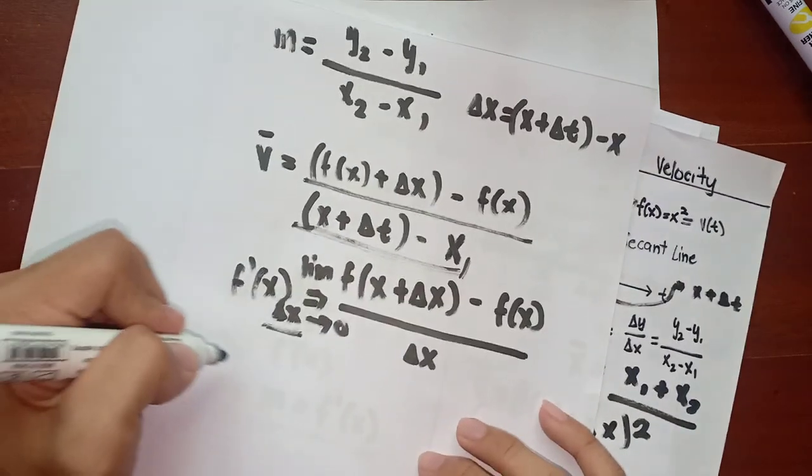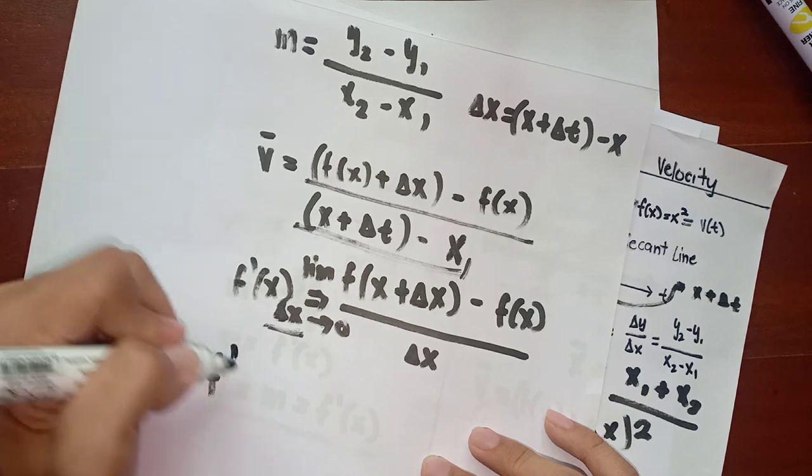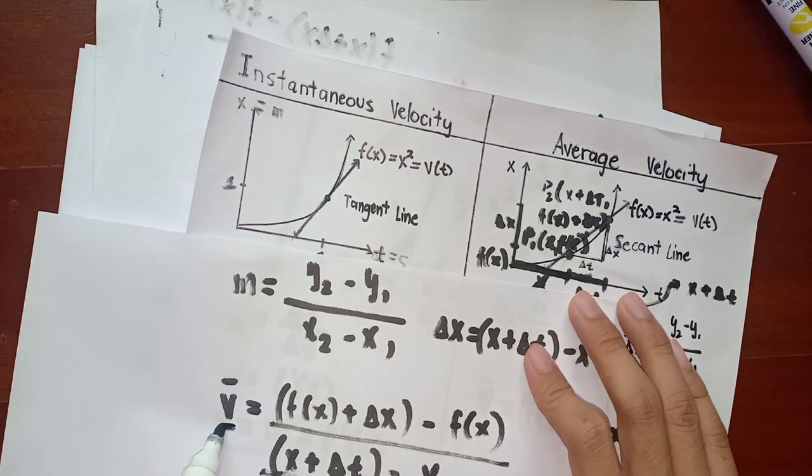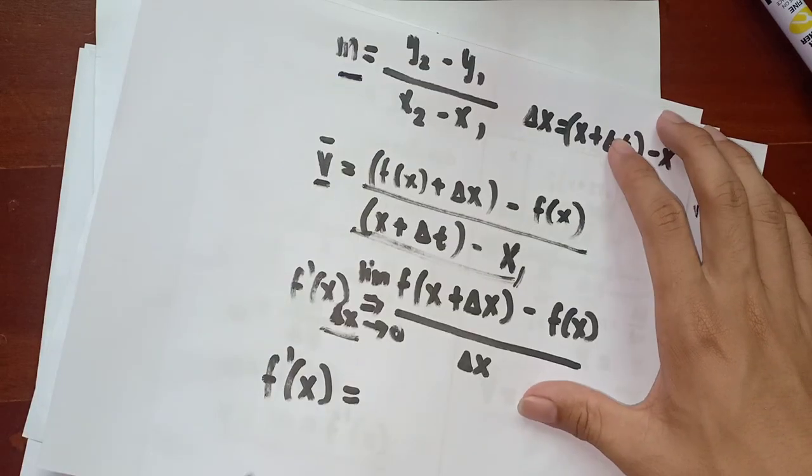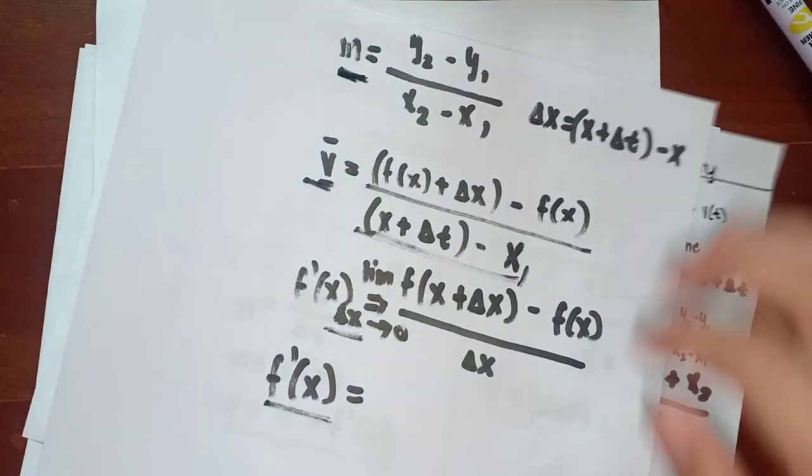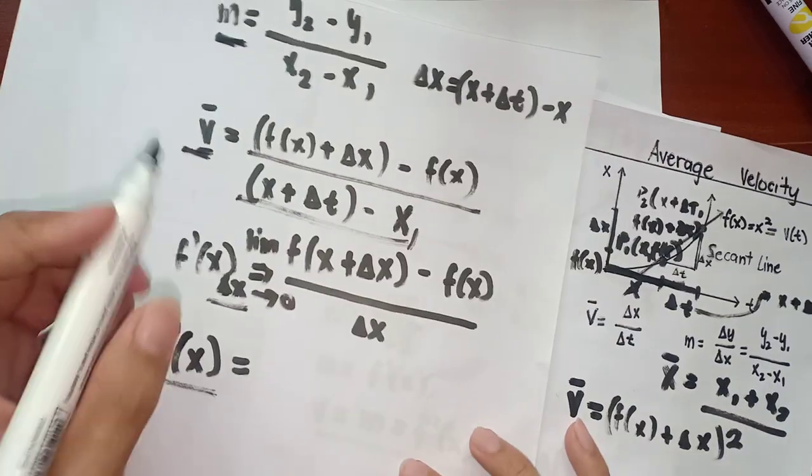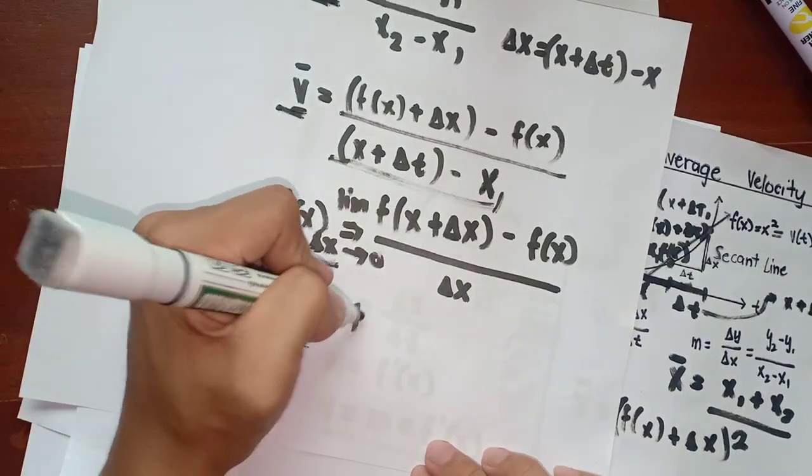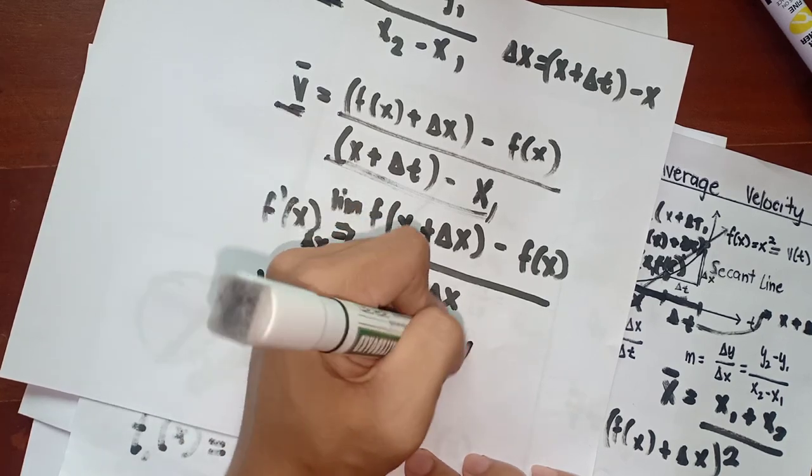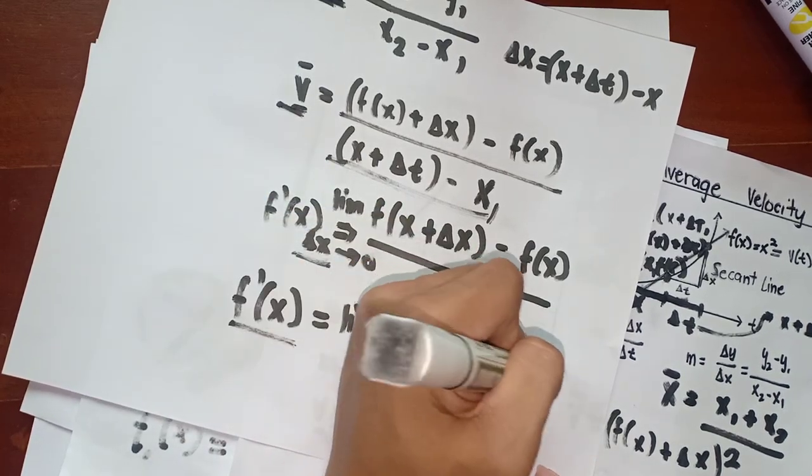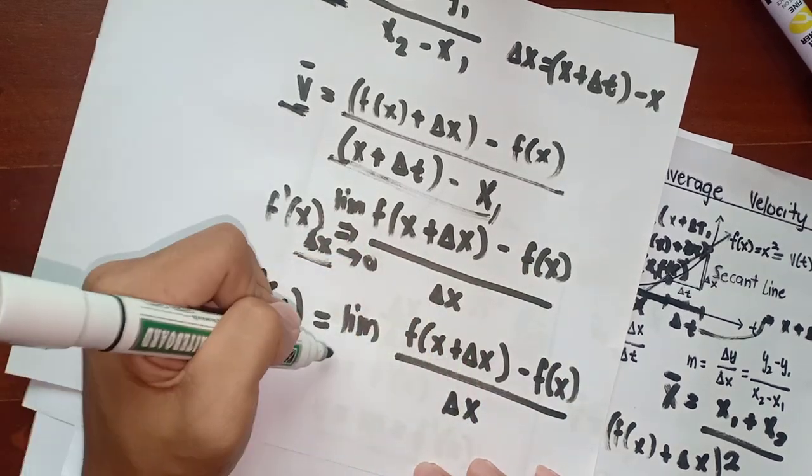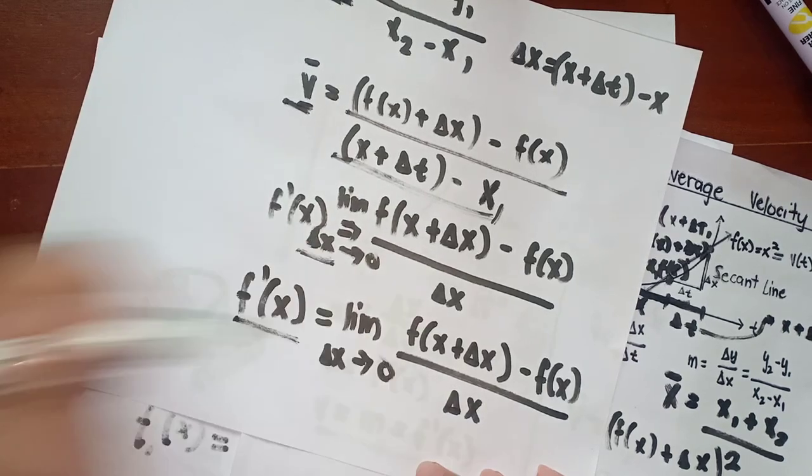That's why we come up with the limit function formula. I'm going to rewrite this: f prime of x, since f prime of x just equals velocity and slope, f prime of x is equal to the limit of f of x plus delta x minus f of x all over delta x as delta x approaches to zero. That's it, guys.